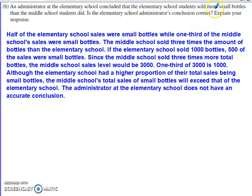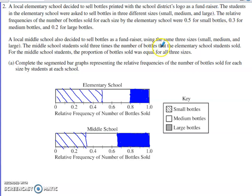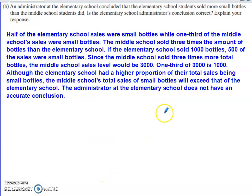This question is about the sales level — the frequency of small bottle sales for the elementary school versus the middle school. The middle school sold three times the number of bottles as the elementary school. Let's say the elementary school sold 1,000 bottles: half were small, so their frequency for small bottle sales would be 500. But the middle school's total sales would be 3,000, and one-third of 3,000 is 1,000. So the frequency of small bottle sales is not bigger for the elementary school students — the administrator's conclusion is incorrect.